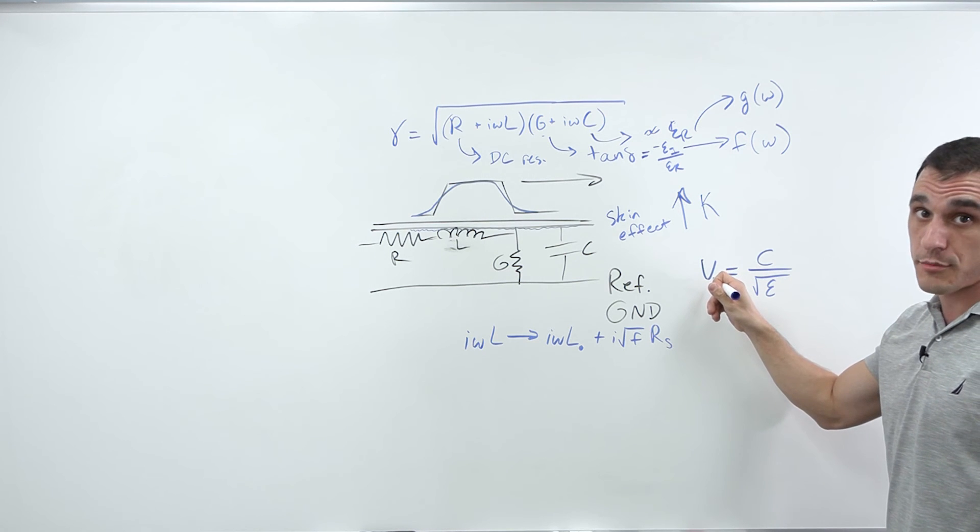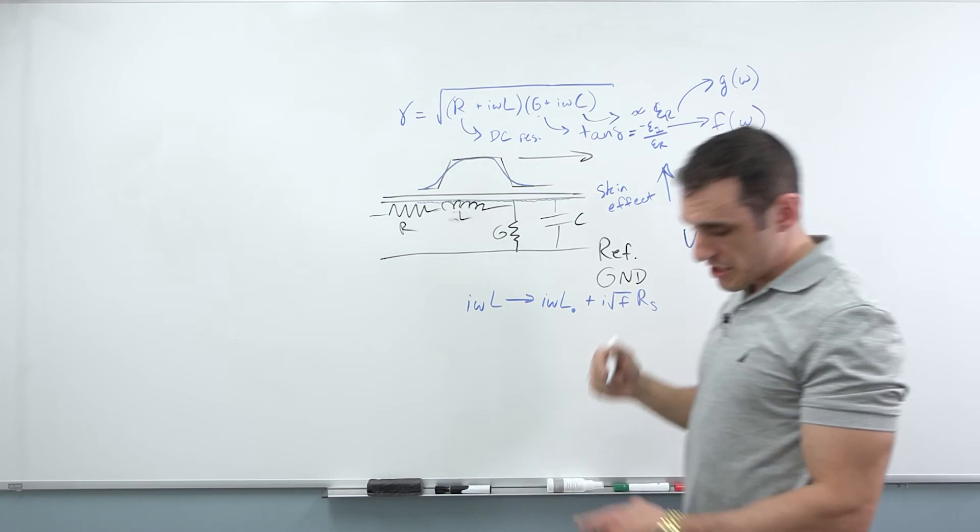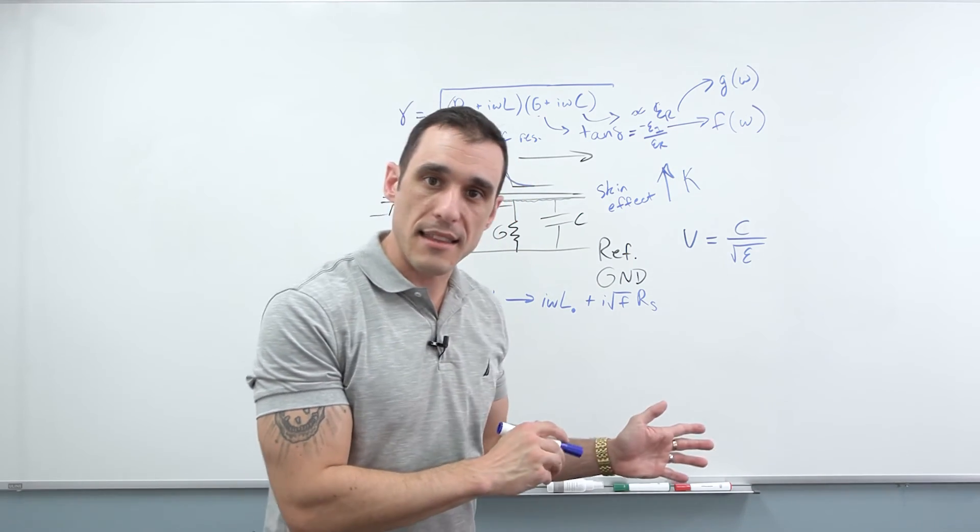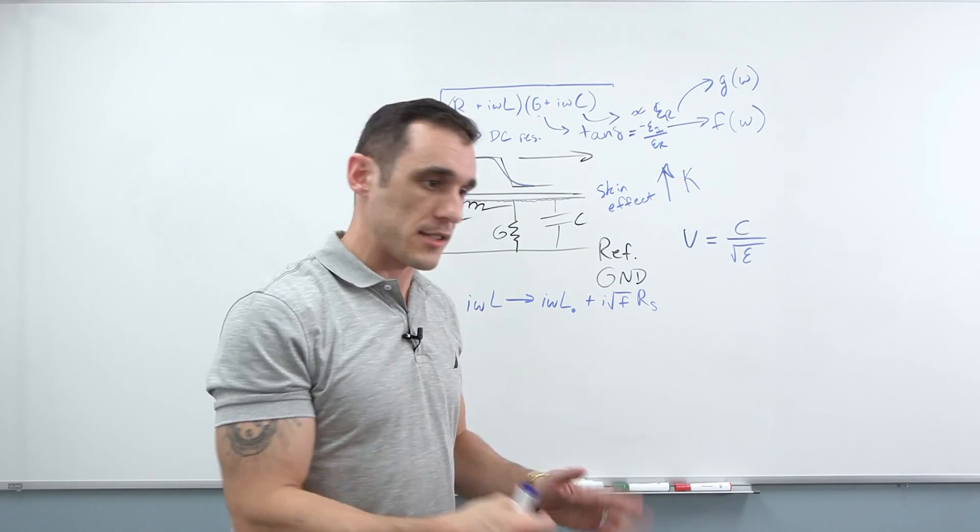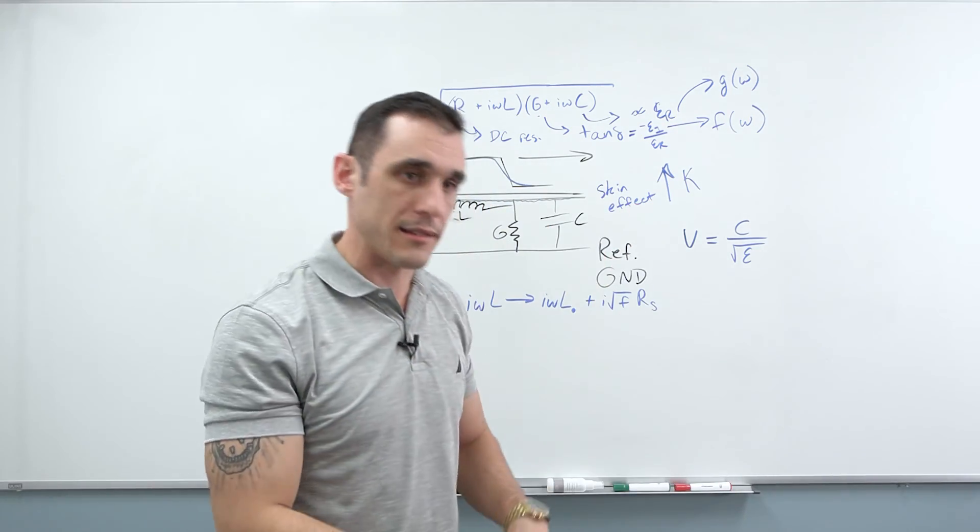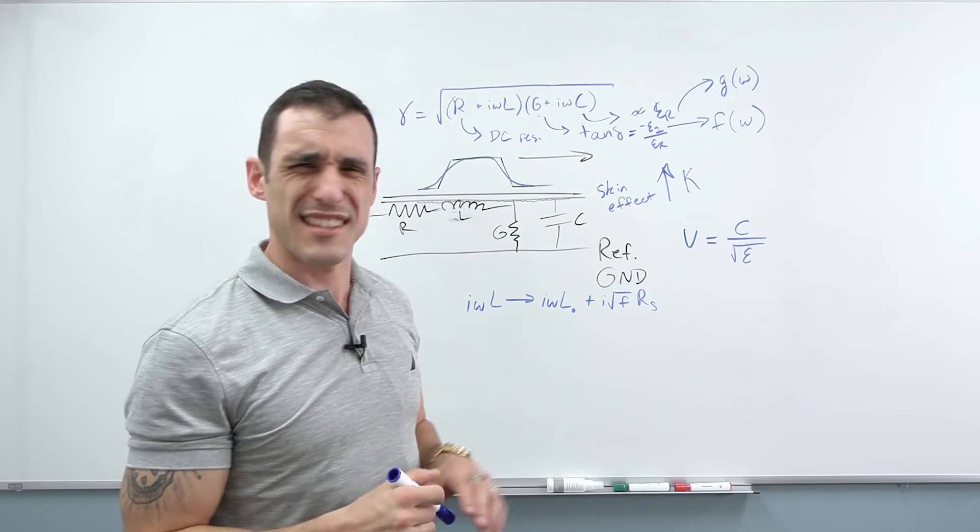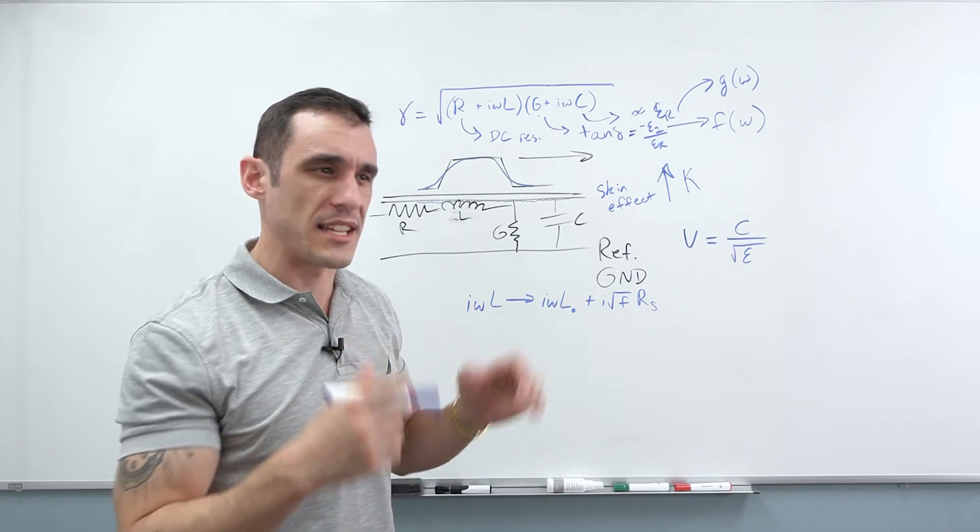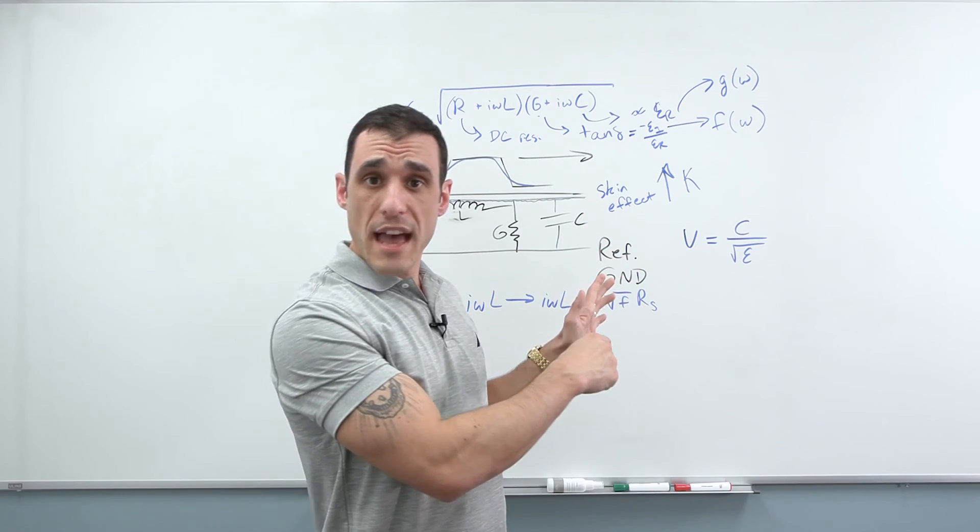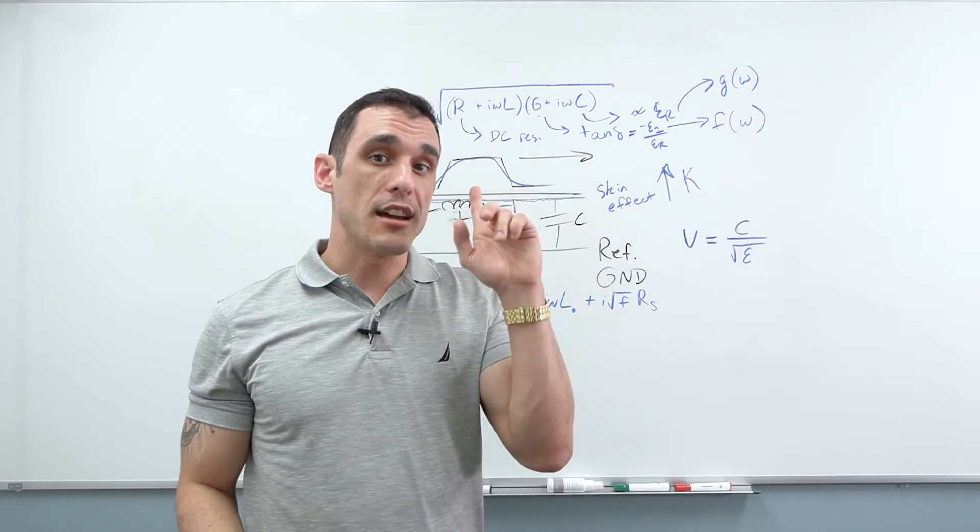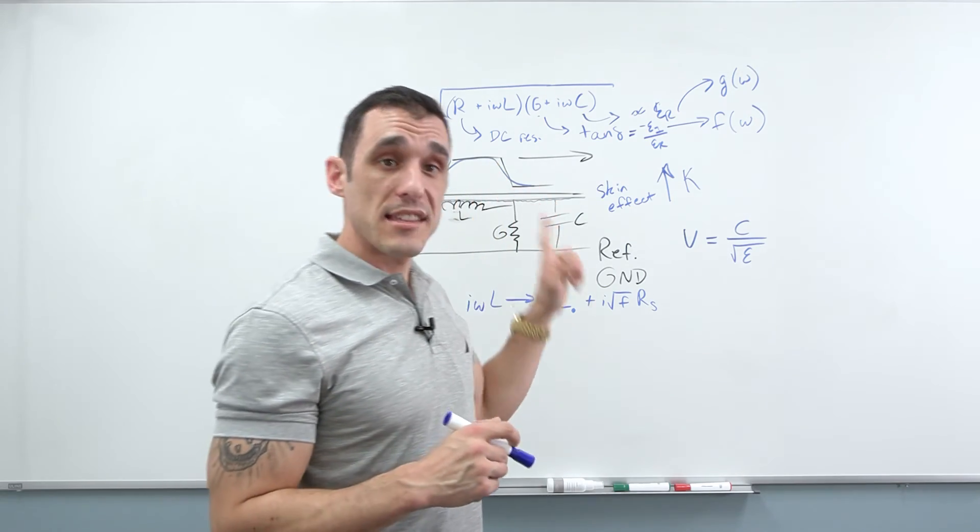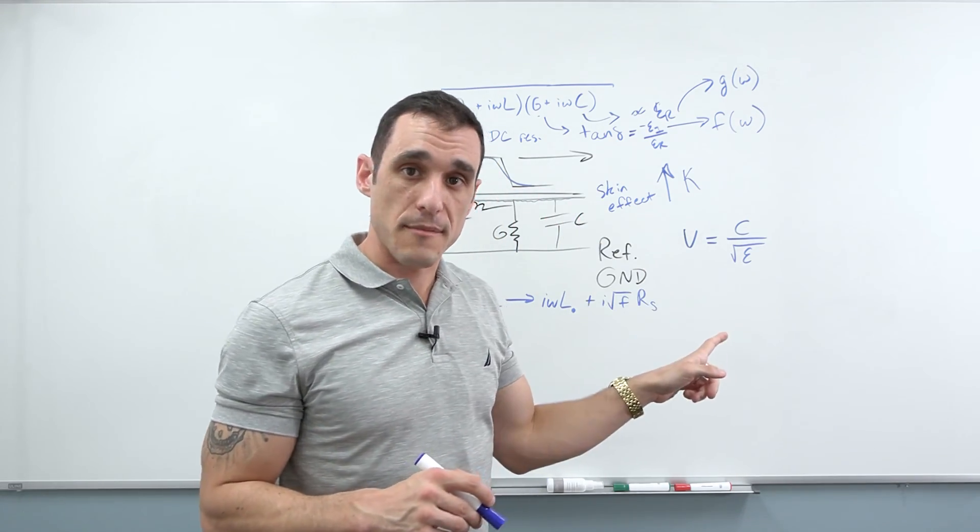So, when you see a number quoted on someone's website that says, oh, the propagation constant is this specific value, whatever value they quote. I think they might quote like, I think six nanoseconds per meter or something like this. I don't have the value memorized. But the point is when they quote that value to you, they're actually only talking about one frequency. So, that doesn't mean that you're going to have that same value for a different frequency.